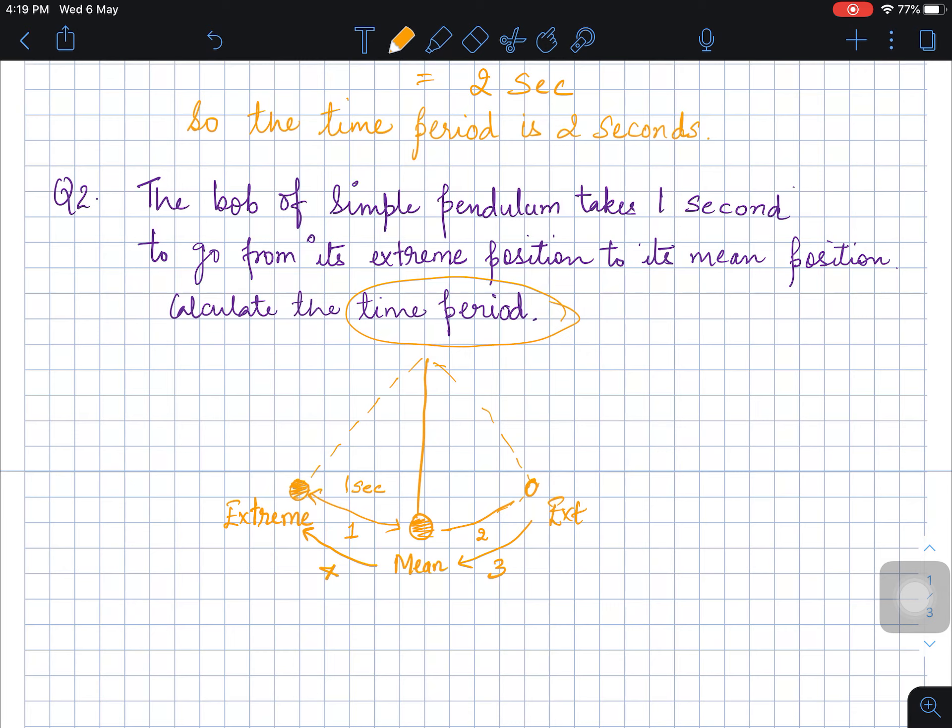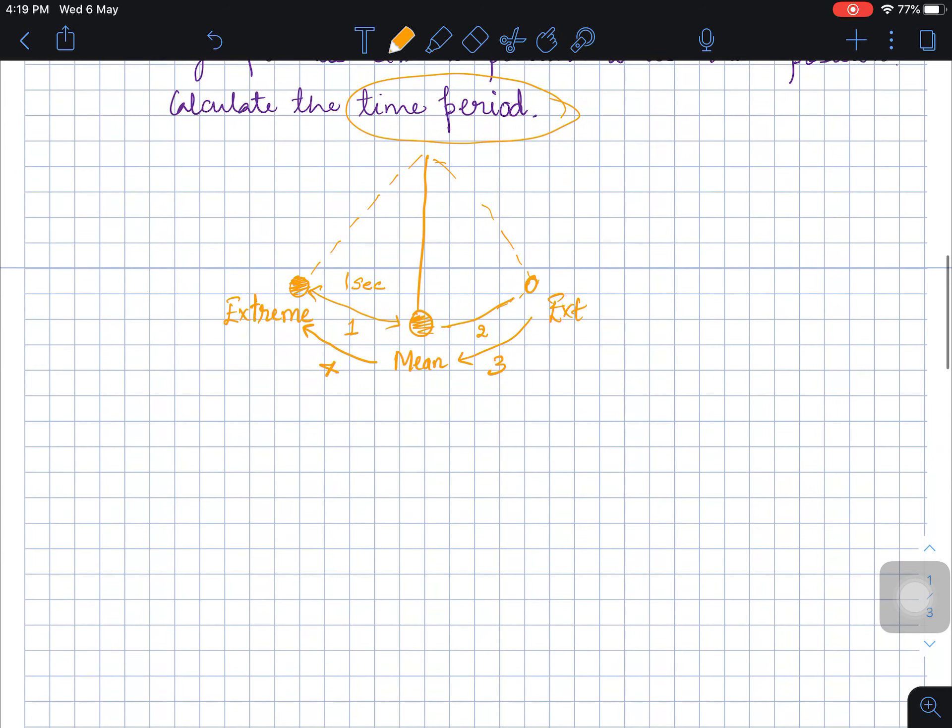So if in this it takes 1 second, then 4 times of this will be complete 1 oscillation, and the time required for that 1 oscillation will be your time period.